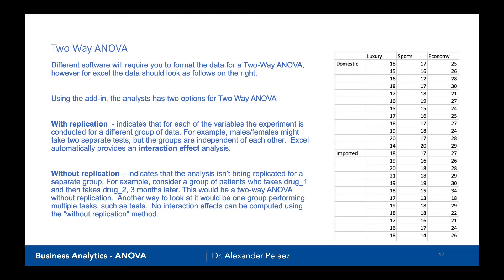Different software requires you to format the data differently. For Excel, we need to format the data like this — we'll have three columns of data: luxury, sports, economy. On the left, we label the start of the first group and the start of the second group. Using the add-in in Excel, there are two options for a two-way ANOVA: one with replication and one without replication.